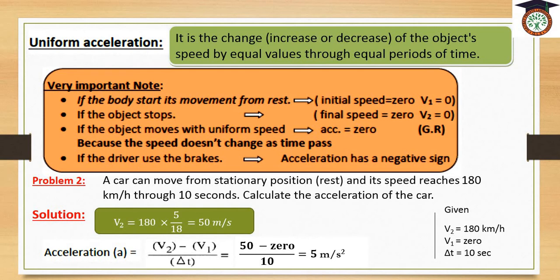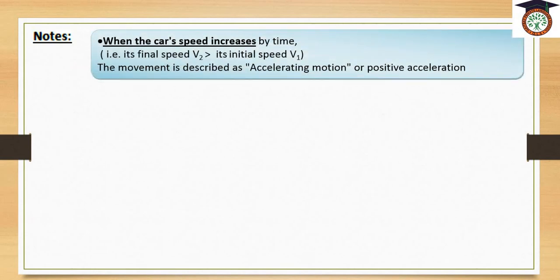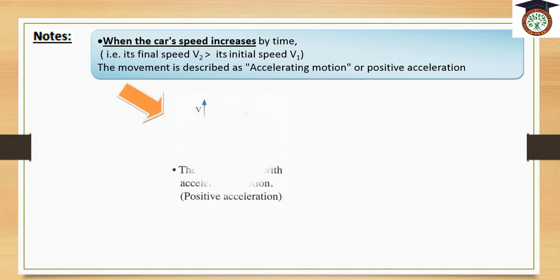So the car here accelerates by 5 meters per second in each one second. Notes: when the car's speed increases as the time passes, the final speed will be greater than the initial speed, and the movement is described as accelerating motion or positive acceleration. We can represent positive acceleration graphically — the relation between velocity and time is represented by a straight line.